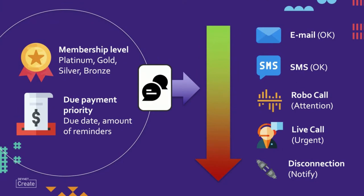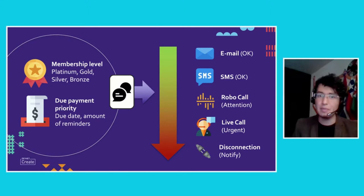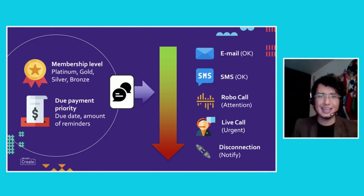Depending on membership level and payment priority, a person would be reached out in a different way. If payment wasn't made within a given time, the person would be contacted by different means with different messages. For example, for a silver user we would start by sending an email — a friendly reminder that they still have time to pay — and then escalate to an SMS.